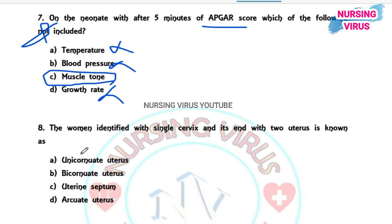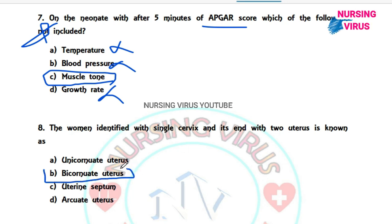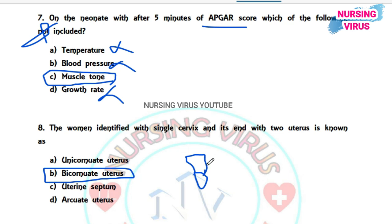Question 8: A condition identified with a single cervix ending with two uteri is known as what? The answer is bicornuate uterus. In a bicornuate uterus, the person has a single opening of the cervix which leads to two uterine bodies.